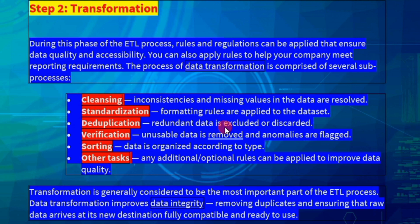Here is the transformation second step. Verification: unusable data is removed, anomalized and flagged. If we add incorrect data, we remove it. Data is organized according to its type, meaning we are going to clean the data.